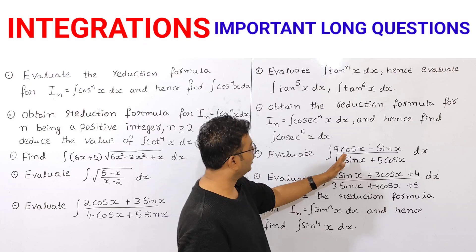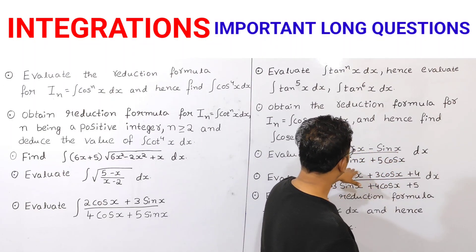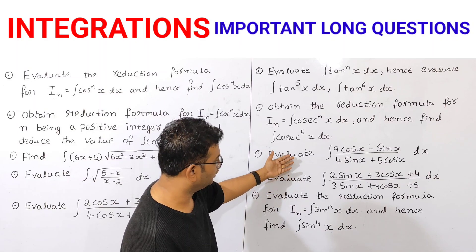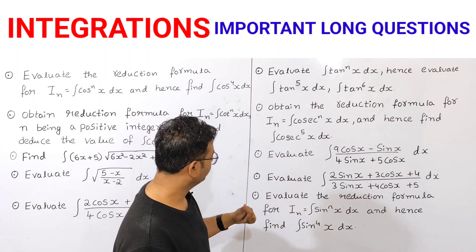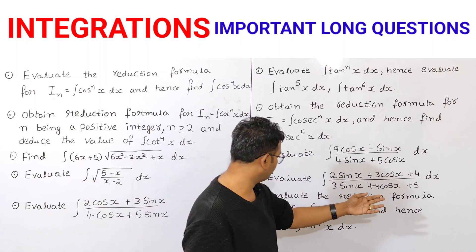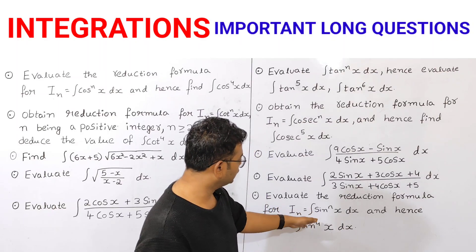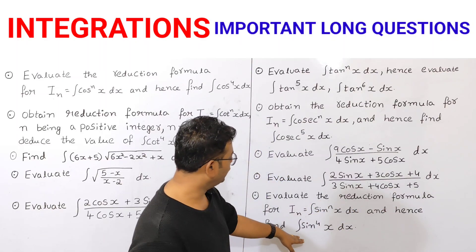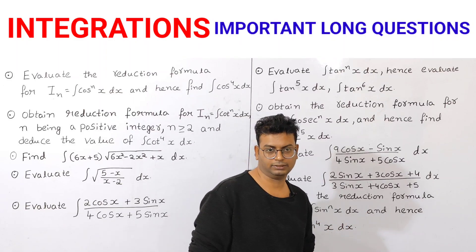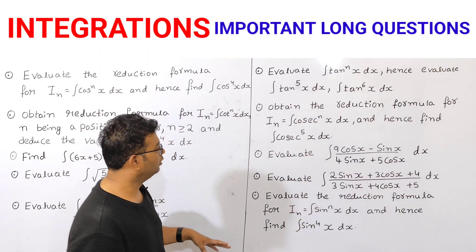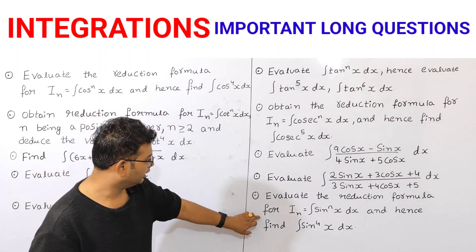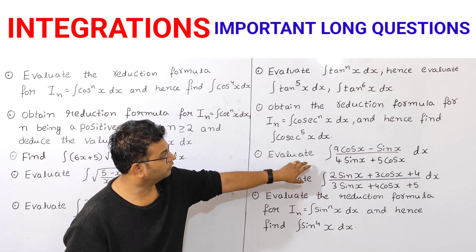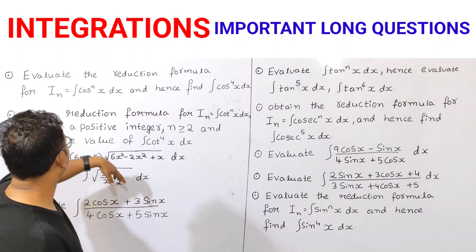Next, evaluate integration of (9 cos x minus sin x) by (4 sin x plus 5 cos x) dx. Next, evaluate the reduction formula for I(n) = integration of sin to the power of n of x dx, and hence find integration of sin 4x dx. Also note: (9 cos x minus sin x) by (4 sin x plus 5 cos x) is among the most important.